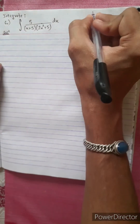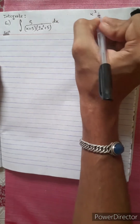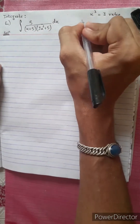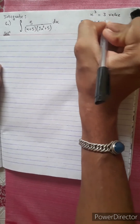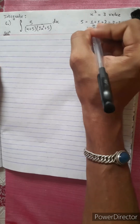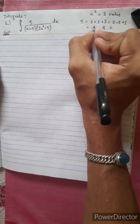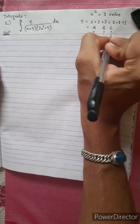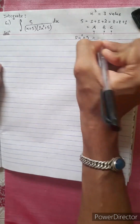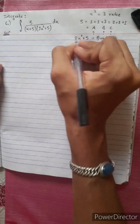We have the expression x plus 5, 2x squared plus 1. We are looking at a degree 3 polynomial. Now, 2x squared plus 5 is a quadratic equation, and we distinguish it from a linear equation.